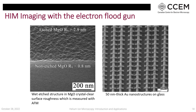More HIM imaging with the electron flood gun from my own samples: to the left are etched structures in MgO single crystal, an insulator with no material contrast — just surface topography. You can clearly see the surface roughness, measured at 2.9 nanometers with AFM compared to 0.8 nanometers for a smoother region. To the right, gold nanostructures fabricated on glass show clear surface details, which would be very difficult to image with SEM, especially for the MgO case.